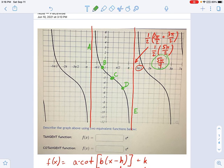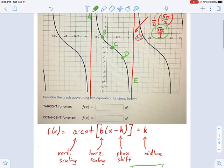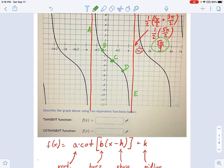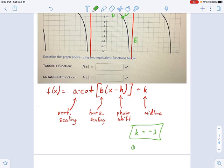We already did the midline. So let's start talking about D and B. The distance from C down to D or the distance from C up to B is your vertical scaling factor. So in this case, you can see that's a height of 2. So that means my A factor, the vertical scaling, is 2.